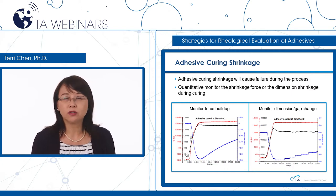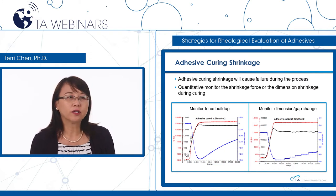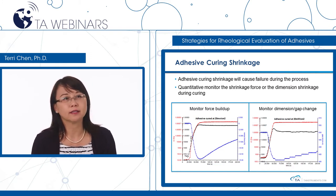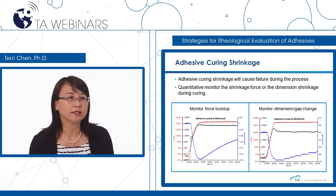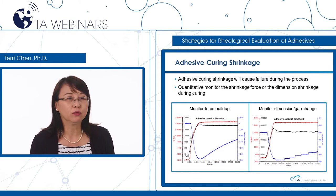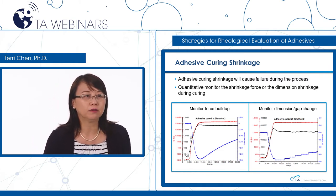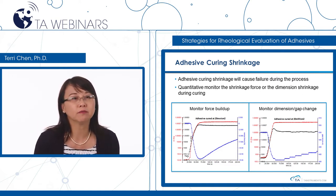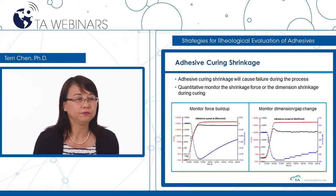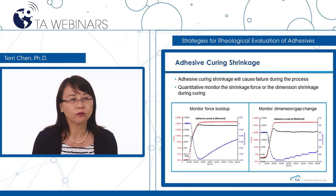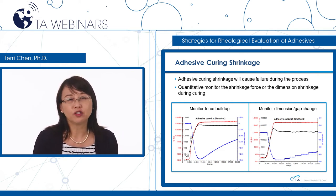In most cases, when material cures, it shrinks in dimension. Adhesive curing shrinkage can cause product failure during the process. Using a rheometer with UV curing accessory, we can quantitatively monitor this shrinking phenomenon. If we fix the measurement gap during measurement, we can monitor the axial force buildup during curing — for this particular sample, the force increased up to almost 15 N across a 20 mm diameter plate, and then after curing was completed, the force slowly relaxed. If we actively release this shrinking force to zero during curing, we can monitor sample dimension change. The figure shows how much the gap reduced during curing.